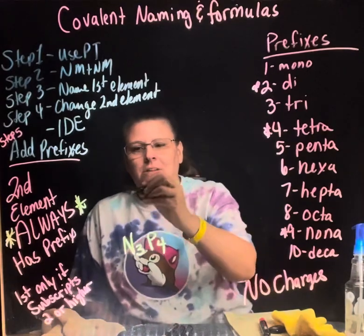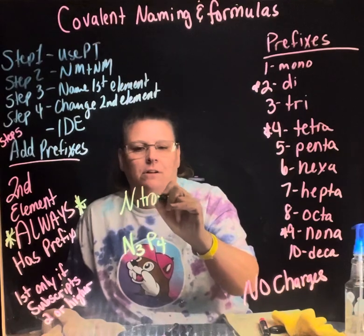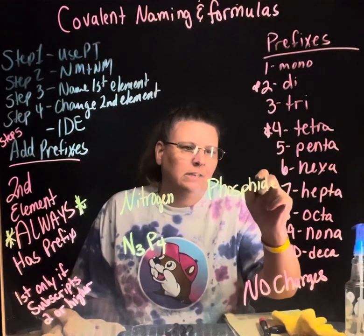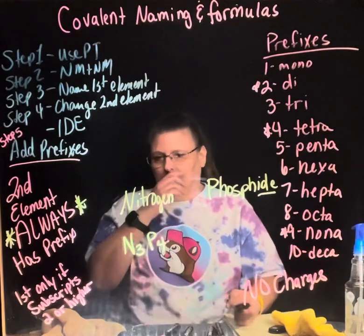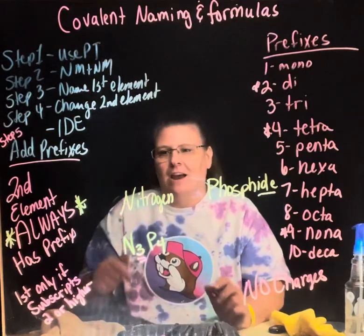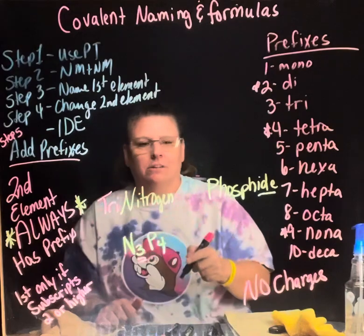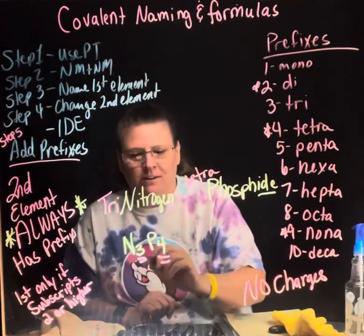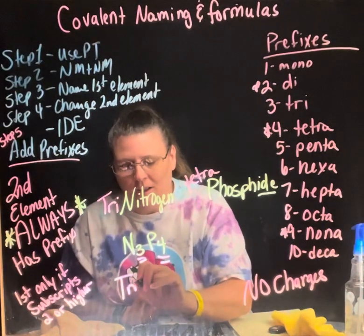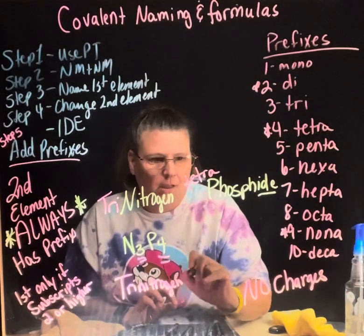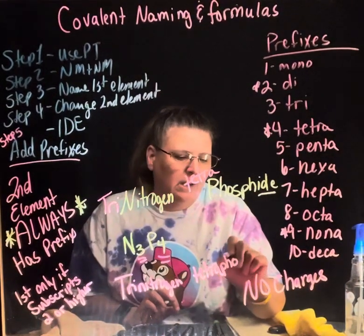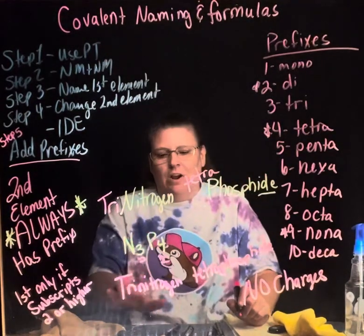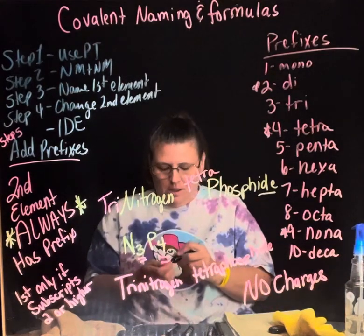Let's try N₃P₄. Both are non-metals. The first element is nitrogen. Phosphorus becomes 'phosphide' with the -ide ending because it's the second element. Now add prefixes — the first subscript is three, so we add 'tri': trinitrogen. The second subscript is four, so we use 'tetra': tetraphosphide. The final name is trinitrogen tetraphosphide — two words.